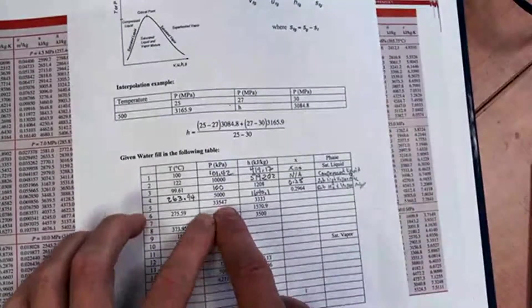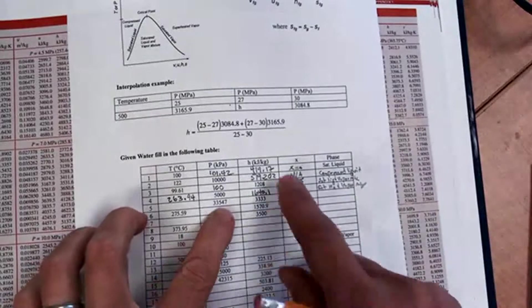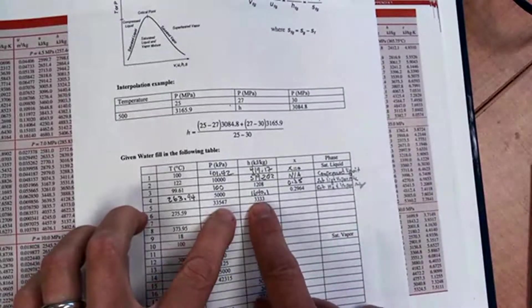Alright, let's do problem five. In problem five you were told that the pressure is 33,547 kilopascals and the enthalpy is 3,333 kilojoules per kilogram.